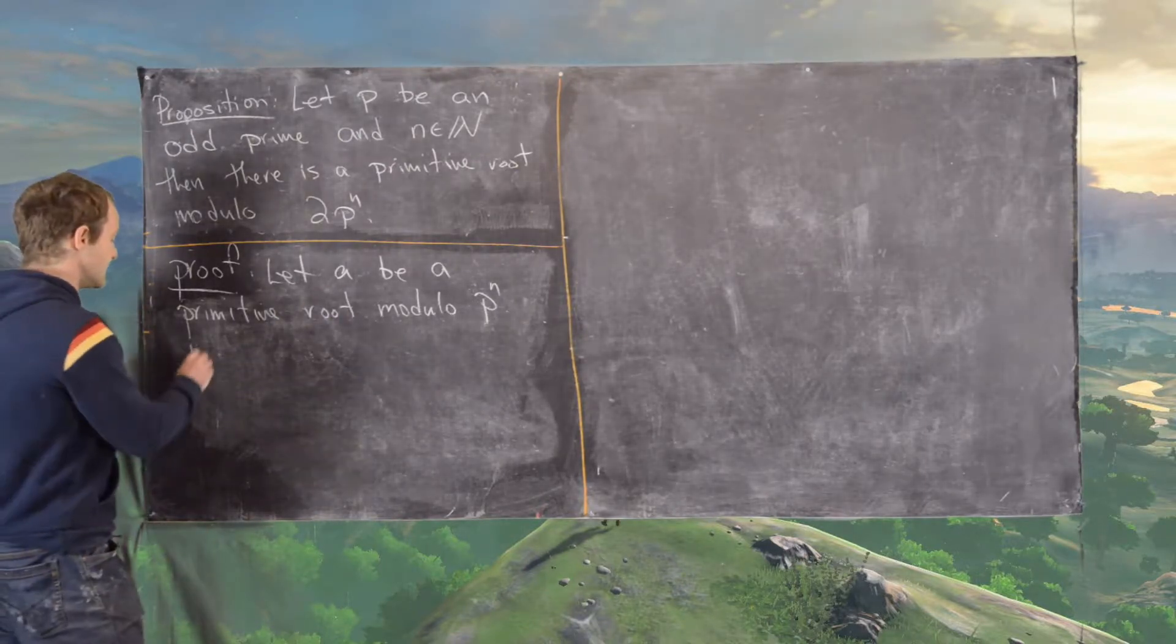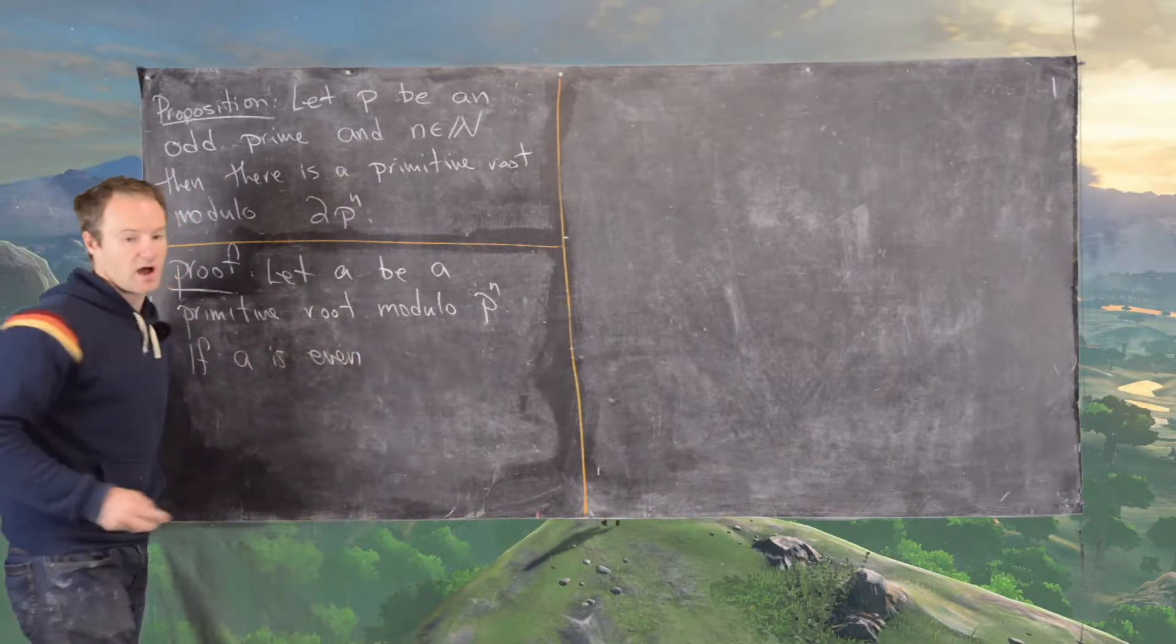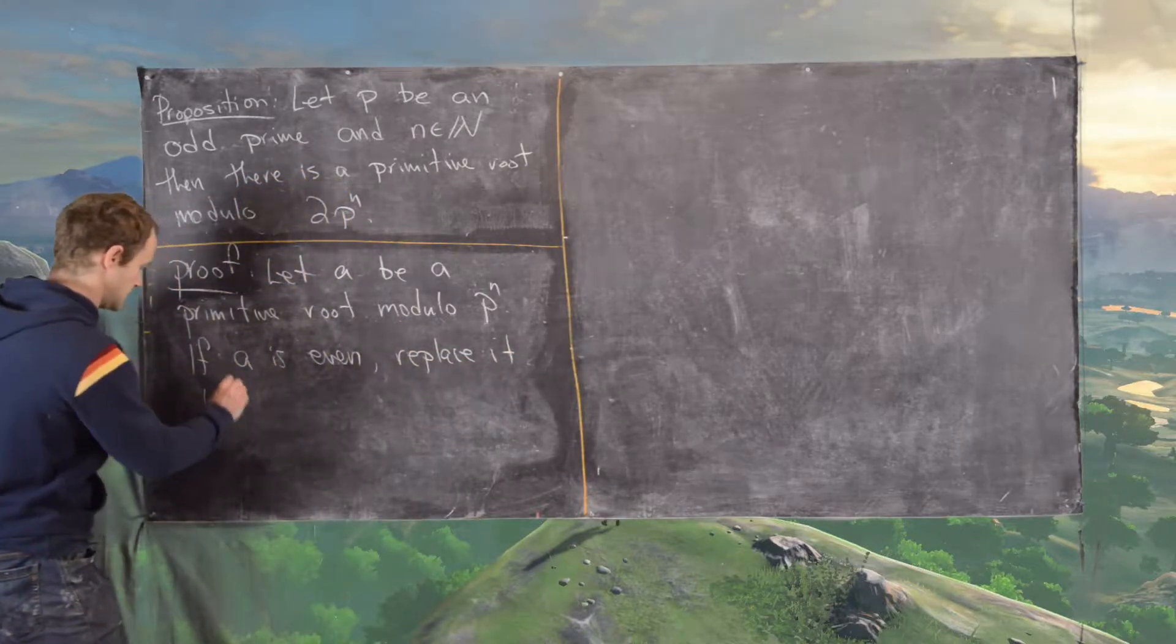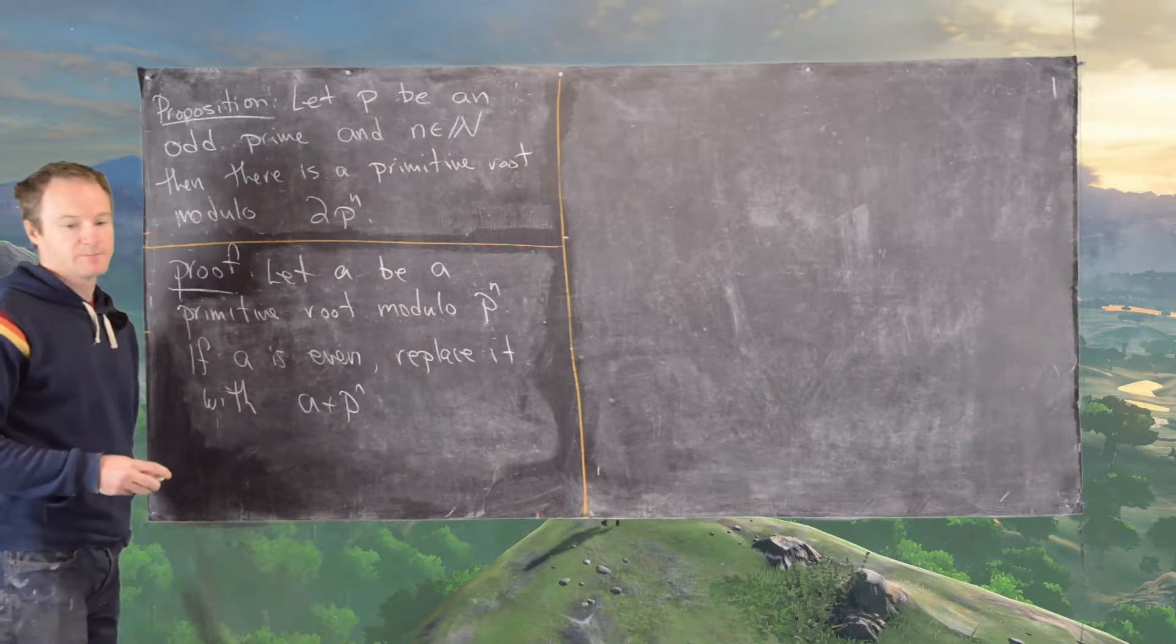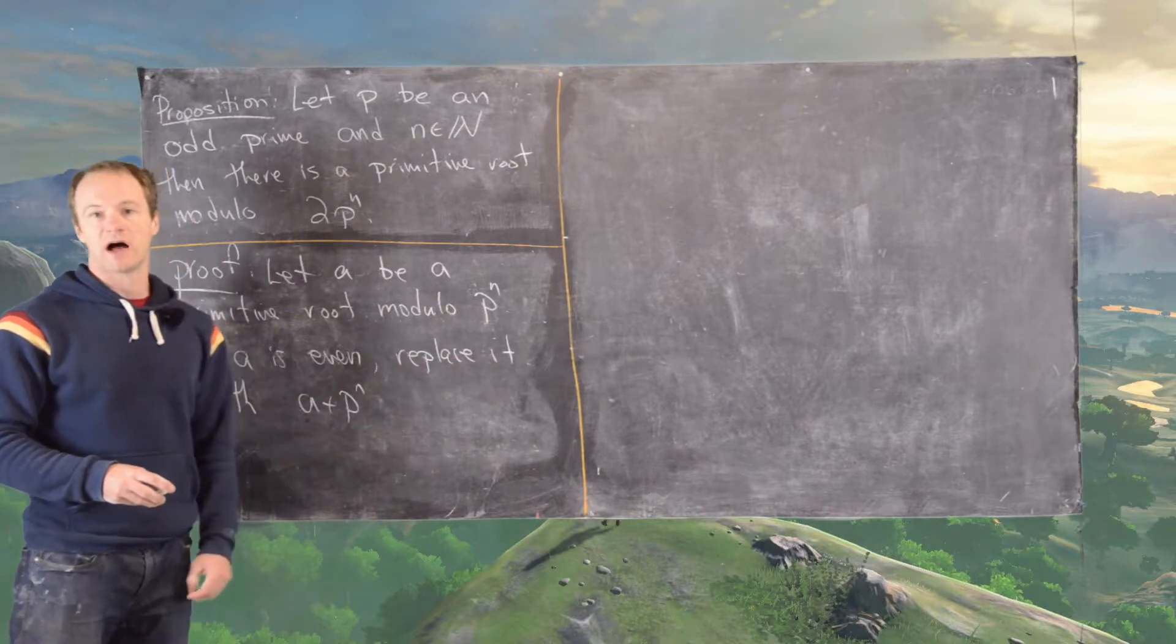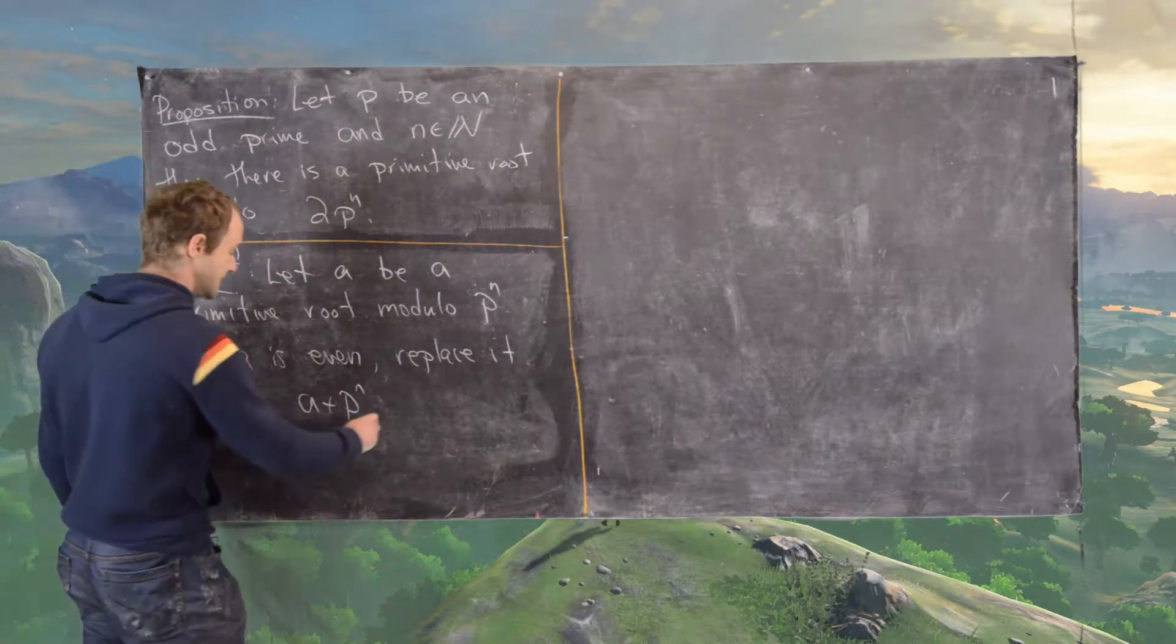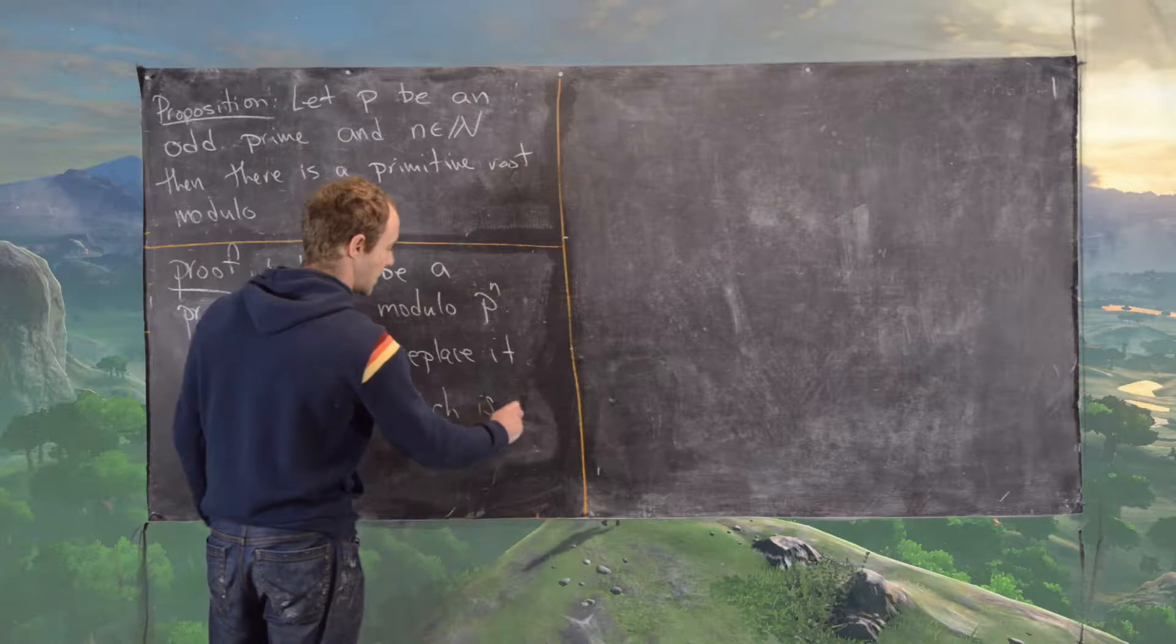If a is even, we'll replace it with a plus p^n, which notice a plus p^n is congruent to a mod p^n. So this is another choice of a primitive root modulo p^n, but it's also odd.